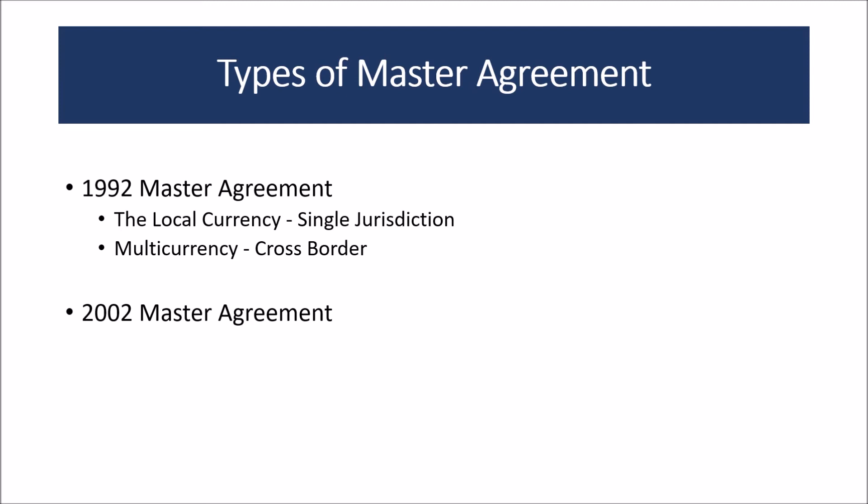The 2002 version is the latest version, or rather an upgrade from 1992, and it can enable transactions entered into between parties in different jurisdictions involving more than one currency. There are important changes in the 2002 master agreement compared to the 1992 master agreement. However, in this video we are only going to discuss the ISDA documentation architecture; the differences between the 1992 and 2002 agreements will be covered in some other video.